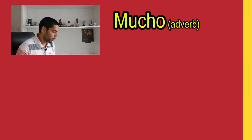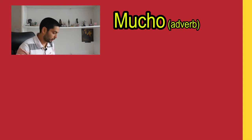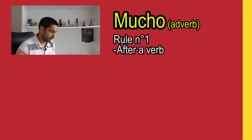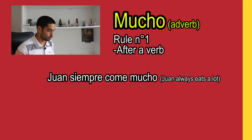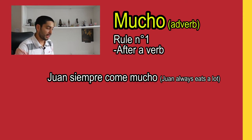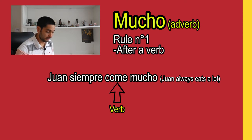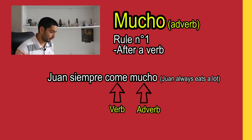Now it's time for the word mucho. We have to know three things about this word. First, it's used as an adverb after a verb. For example: Juan siempre come mucho — come is the verb, and mucho here is used as an adverb, so it will never suffer any variation.